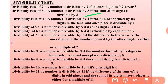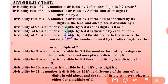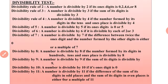Divisibility by 4: a number is divisible by 4 if the number formed by its tens and ones digits is divisible by 4. For example, in 112, the last two digits are 12, and since 12 is divisible by 4, the full number 112 is also divisible by 4. Divisibility by 5: a number is divisible by 5 if its ones digit is 0 or 5.